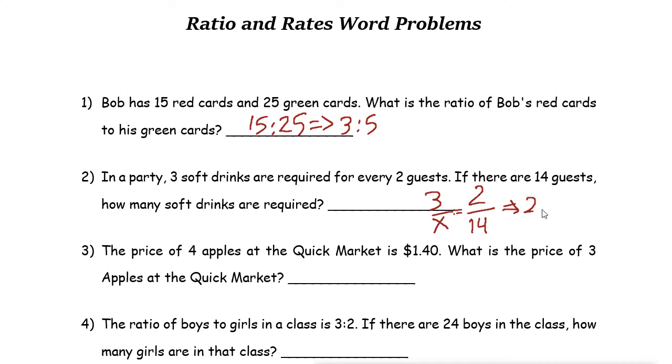2 times x is 2x equals to 3 times 14 which is 42. Then divide both sides by 2, these two cancel out. x is 42 divided by 2 is 21. So we need 21 soft drinks.